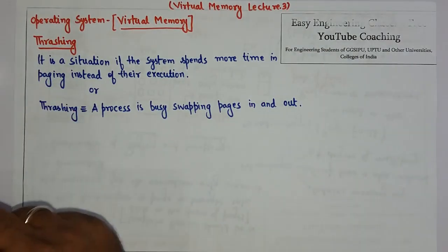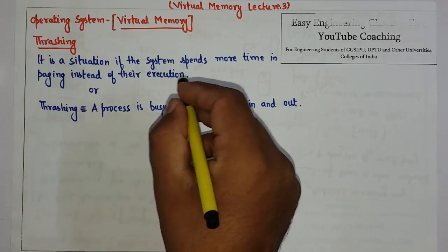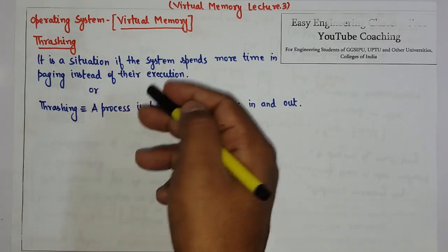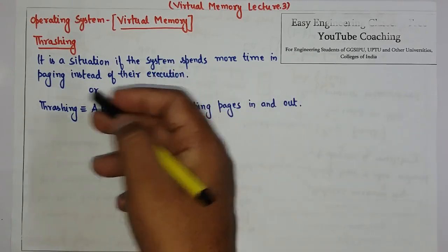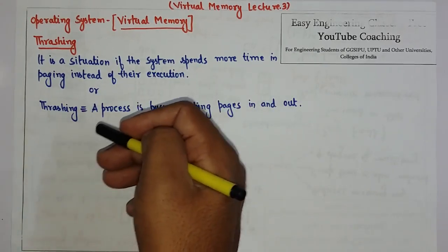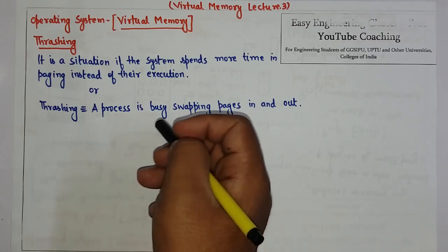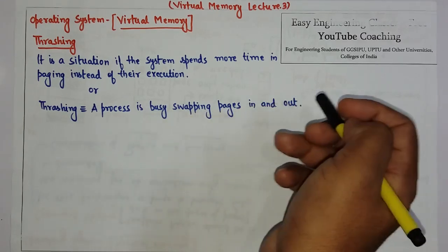It is a situation if the system starts spending more time in paging instead of their execution. We can also say that thrashing is a concept in which a process is busy swapping pages in and out.